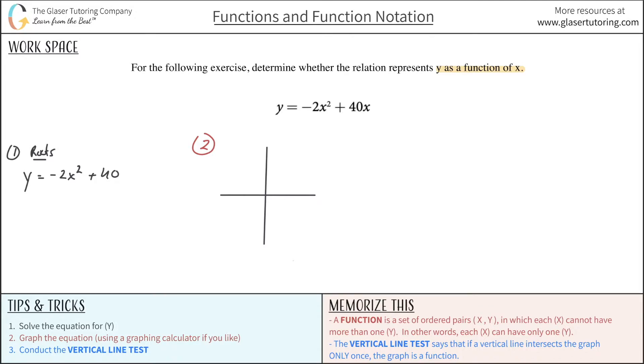What I'm going to do is set this thing equal to zero, just like we were solving any quadratic, so this becomes negative 2x squared plus 40x. I can factor out a common x between these two. So that means now I have zero equals x times negative 2x plus 40.